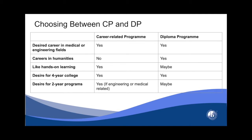If you like hands-on learning, CP is a definite choice. DP has some courses that will be more hands-on. If you want to go to a four-year college, both CP and DP are great. For desire for two-year programs, yes if they are engineering or medical related for the CP, and possibly for the Diploma program. You'll do fine in a two-year program with the Diploma program; however, it might be over-preparing you for a two-year program.